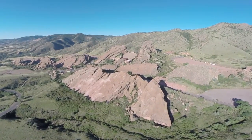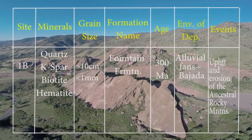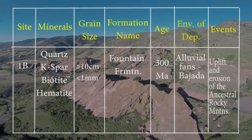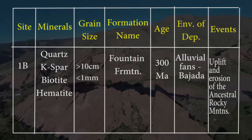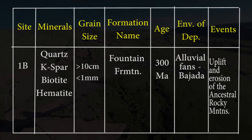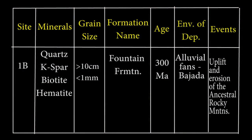For our lab chart, the Fountain Formation is unit 1B. It has very poorly sorted grain size ranging from over 10 centimeters to under 1 millimeter. The minerals are basically those of the Idaho Springs: quartz, K-feldspar, biotite, and hematite, but the biotite has mostly weathered out and turned to hematite cement. Quartz is no surprise here as it's very resistant to weathering, but potassium feldspar remaining from the Idaho Springs clasts gives us another clue that these clasts did not erode too far or spend too much time exposed at the surface.